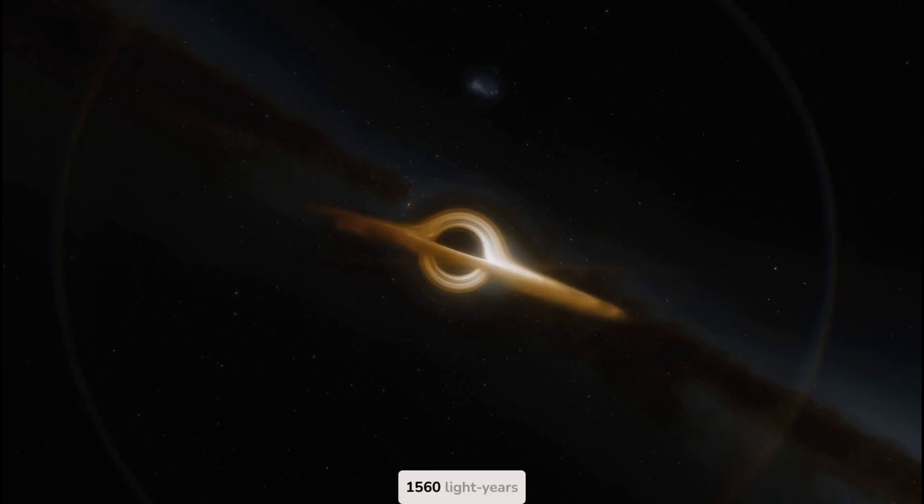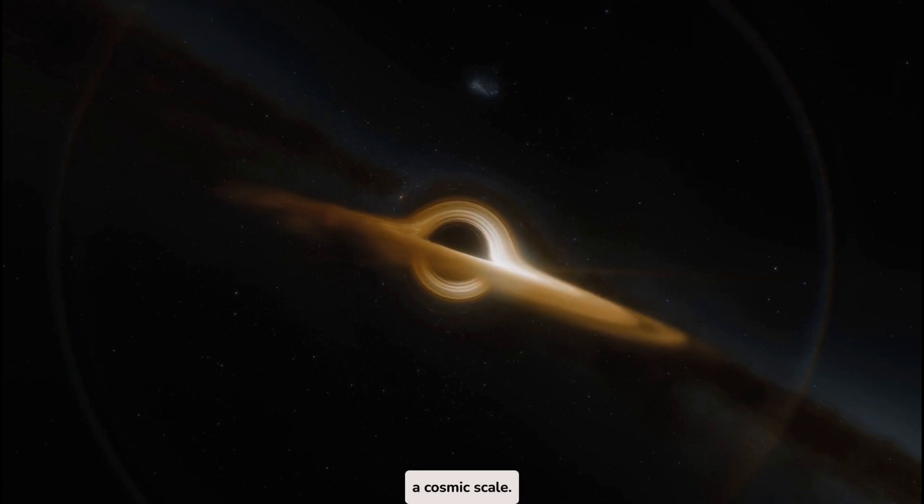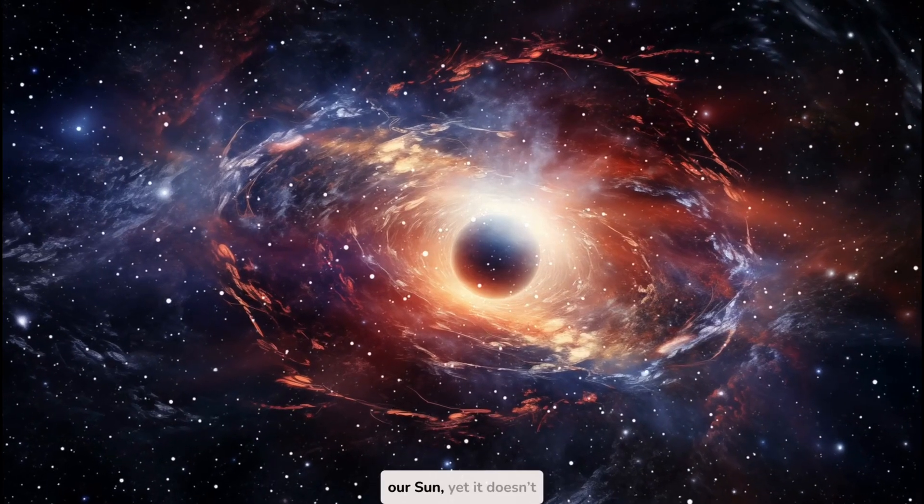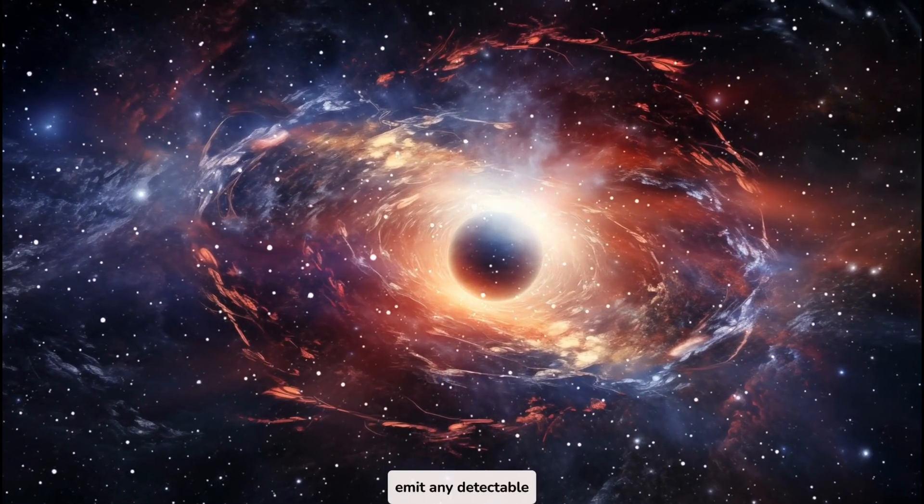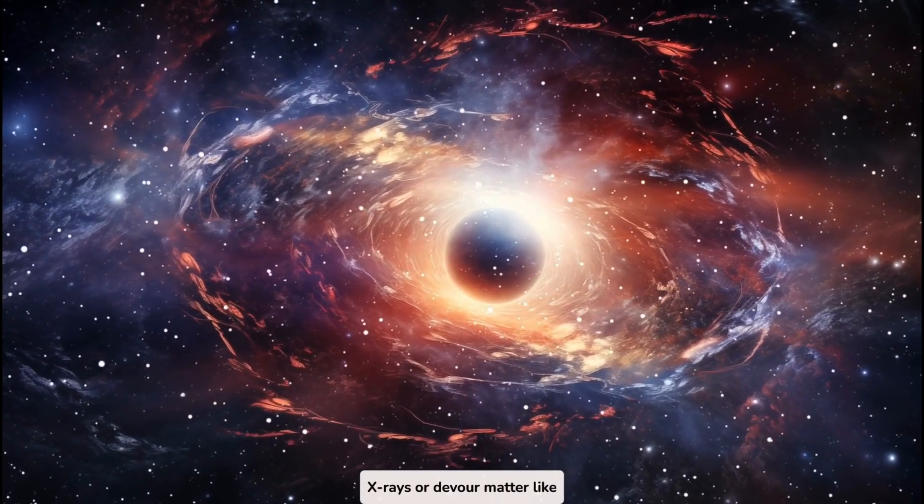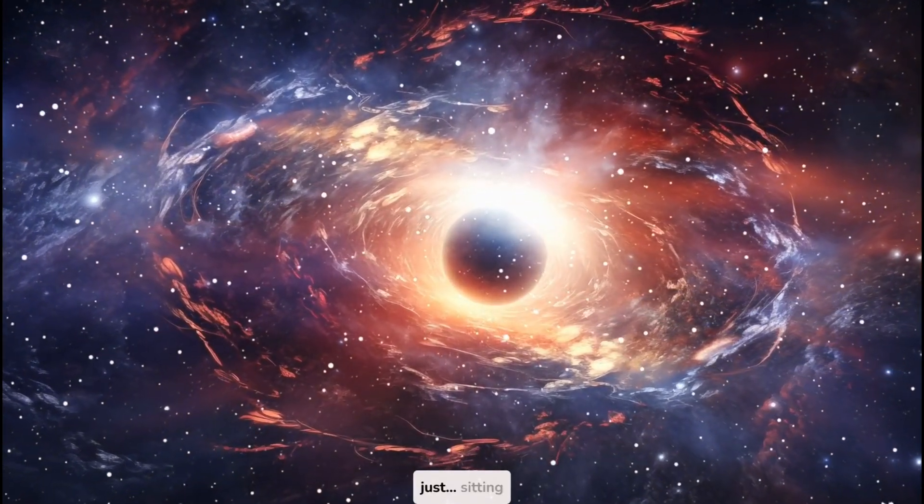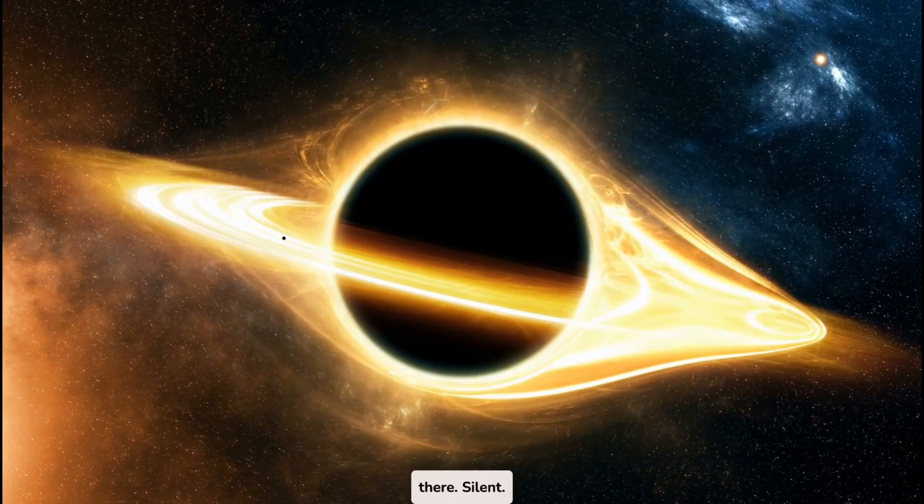Gaia BH1 is only 1,560 light-years away, practically next door on a cosmic scale. It's about ten times the mass of our sun, yet it doesn't emit any detectable x-rays or devour matter like typical black holes. It's just sitting there, silent, hidden.